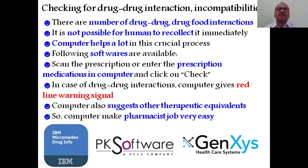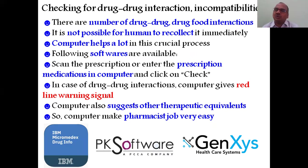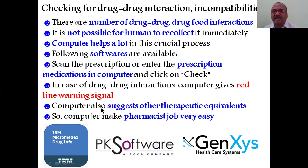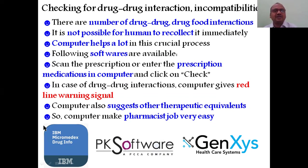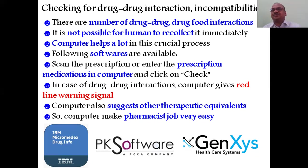An important step: checking for drug interactions and drug incompatibilities. There are three lakh drug-drug interactions — it is not possible for a human being to recollect all of them immediately, so software helps a lot. The softwares to write in the examination are: first, Micromedics; second, PK Software; third, GenXY Healthcare System. You can scan the prescription or enter the medications manually; if a drug-drug interaction is found, it gives a red-line warning signal on the display immediately.